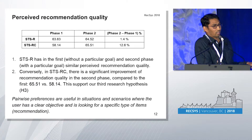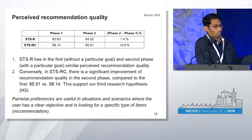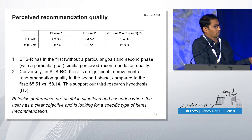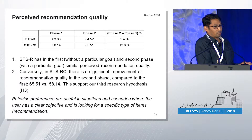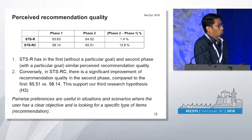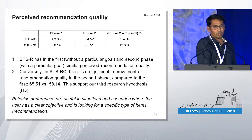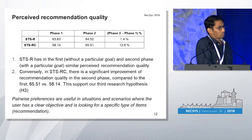Whereas for the comparison variant, when there is no specific objective it doesn't perform well. But as soon as you have a specific goal and are looking for a specific type of recommendation, it performs significantly better, improving over 12%. This supports our third research hypothesis.